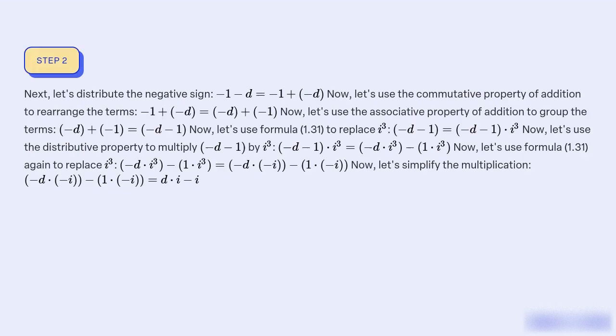Next, let's distribute the negative sign. −1 − d equals −1 + (−d).